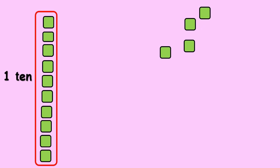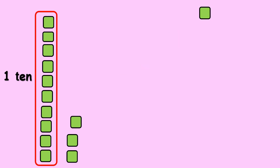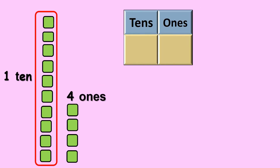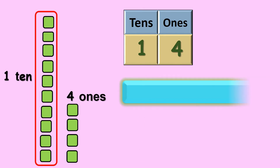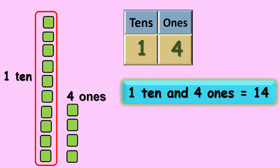And the remaining are 1 2 3 4, so there are 4 ones. So 1 ten and 4 ones gives you 14.